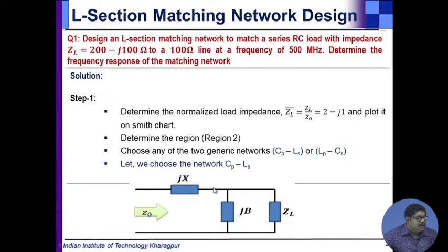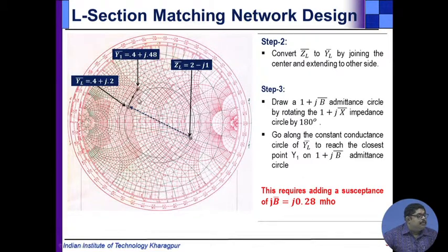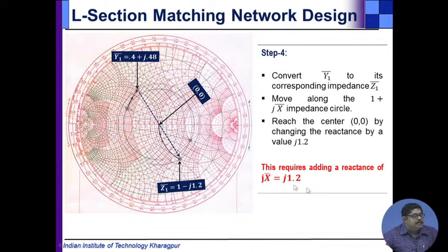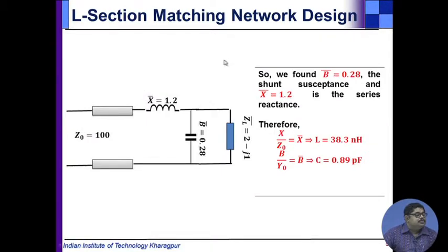We can also continue further along the constant conductance circle and cut the 1 plus jB circle at another point, giving a second solution. Moving along the constant conductance circle of Y_L to reach Y1, we determine how much susceptance needs to be added — that change is provided by the parallel capacitor C_P. Then converting Y1 to impedance Z1, we are already on the 1 plus jX circle and move to the origin by adding series reactance.